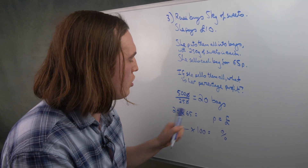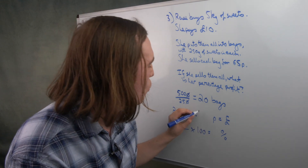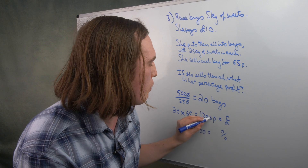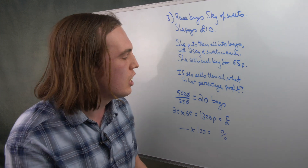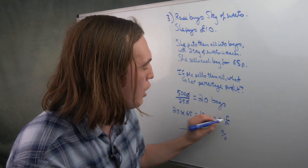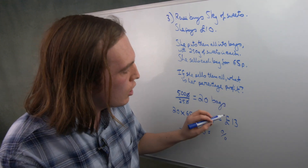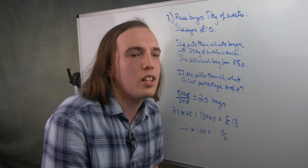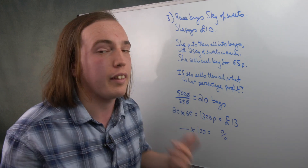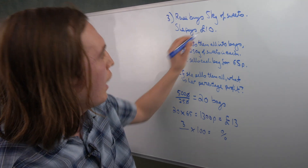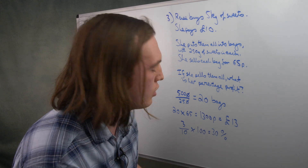These 20 bags are each sold for 65p. 2 times 65 would be 130, so 20 times would be 1,300p. We don't talk about money in terms of pence, so putting it in pounds — there are 100 pennies in a pound — that makes £13 from selling sweets. She just made £13 and spent £10, giving a profit of £3. For percentage profit: £3 out of the original £10 spent, times by 100, tells us she made a percentage profit of 30%.